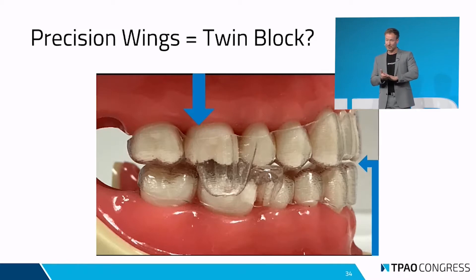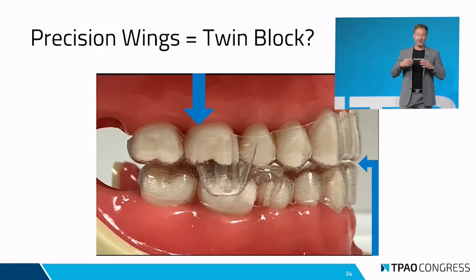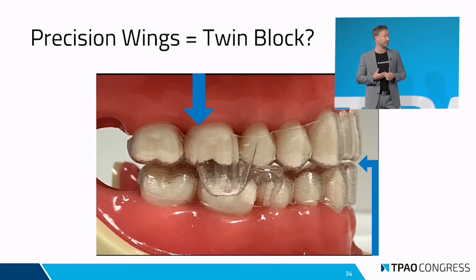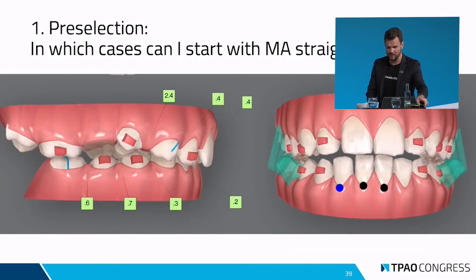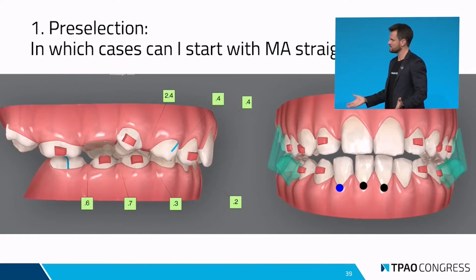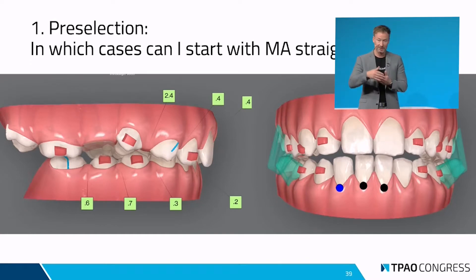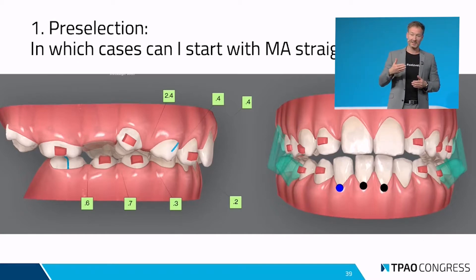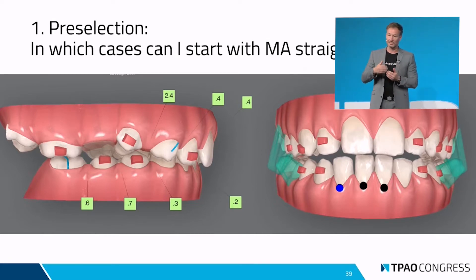Das Ganze ist sehr gut, hat aber auch ein paar Nachteile im Hinblick auf die Verankerung — dazu kommen wir gleich. Generell ist es toll, dass man auch hier bei Aligner-Behandlungen von frühen Behandlungen direkt mit Alignern sprechen kann. Und jetzt kommen wir zu den Clean-Checks und stellen die Frage: Pre-Selection — wann können wir direkt mit MA anfangen? Eigentlich fast nie, also selten. Nur dann, wenn wir direkt zu Beginn wirklich den entsprechenden Overjet haben, weil wir pro Sprung zwei Millimeter Vorschub generieren. Wenn die sagittale Stufe nicht gegeben ist, wird es schwierig.